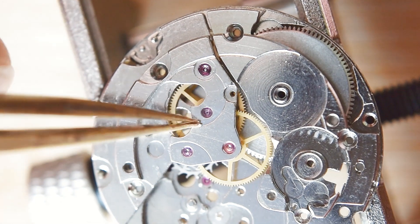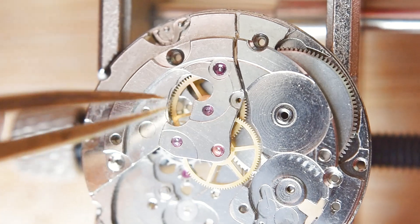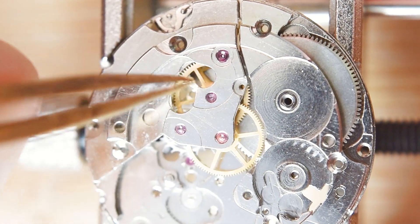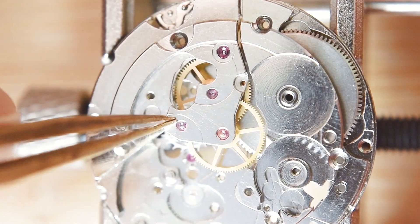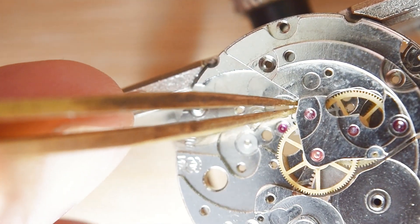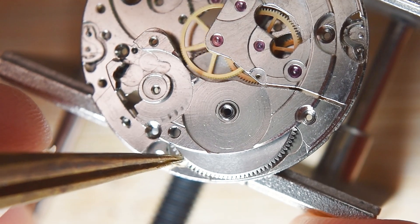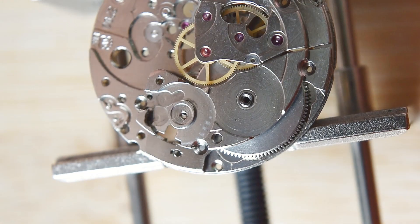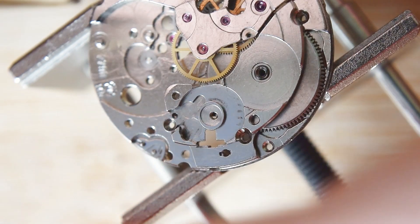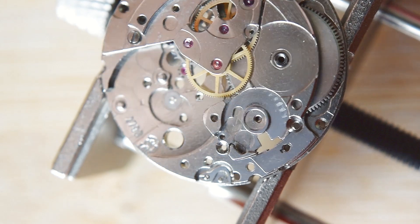By the way, this ETA 2790 is quite interesting movement. It has double date as you will see later, quick set day and date, and it has 28,800 beats per hour. That's also quite interesting, like ETA 2824. Another interesting feature is that this movement has a stop second function.